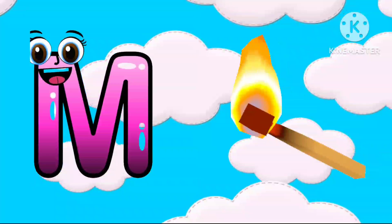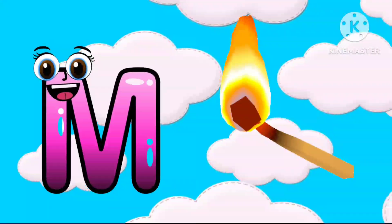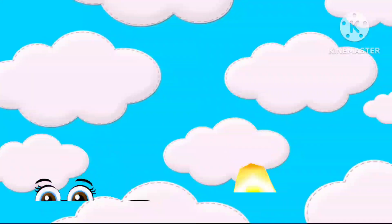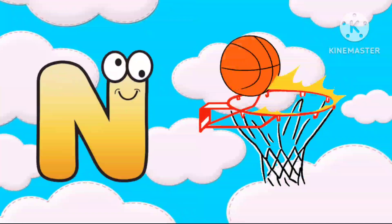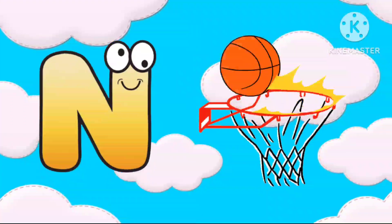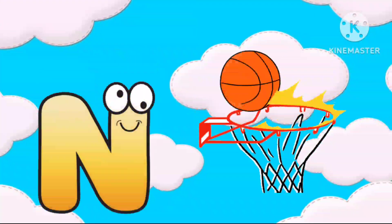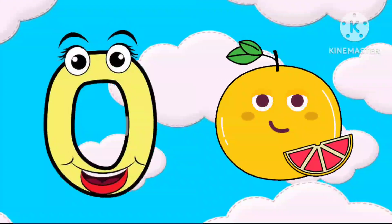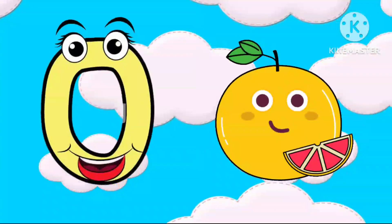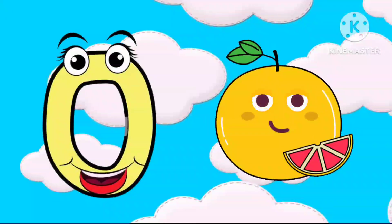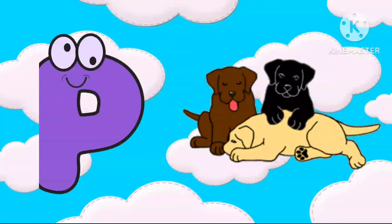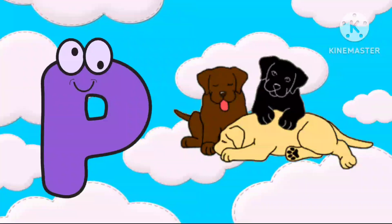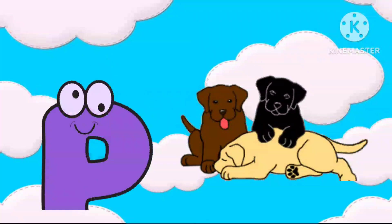M is for Mat, M-M-Mat. N is for Net, N-N-Net. O is for Orange, O-O-Orange. P is for Pet, P-P-Pet.